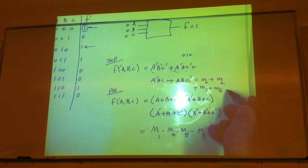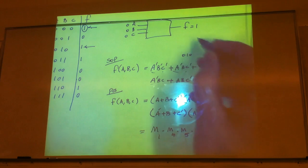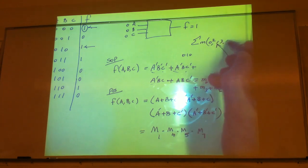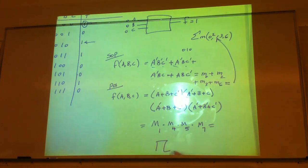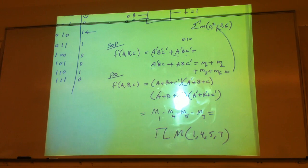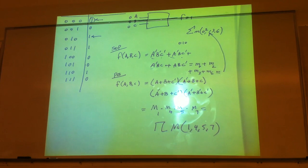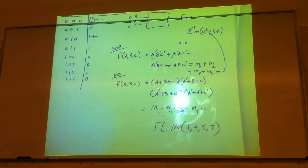Another notation we can use for the sum-of-products form is summation of m(0, 2, 3, 6), and for the product-of-sums form we write product of M(1, 4, 5, 7). These are just shorthand notations to make things easier. The concept of max-term and min-term expansion is that when writing these terms we replace them with M notation, where the subscript starts from 0 through 2^n minus 1.